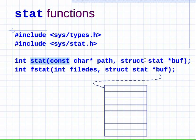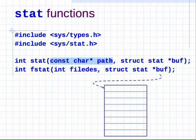The function takes a pointer to a struct of type `stat` and puts information into that area of memory. You, the programmer, have to allocate a chunk of memory and pass a pointer to it to the `stat` function. The function looks up the information for the file indicated by the path and fills in the fields of the struct with the relevant information. Before calling `stat`, you almost always have to `malloc` or otherwise set aside a struct for the query.